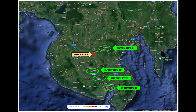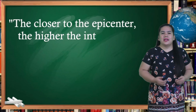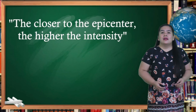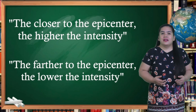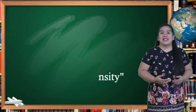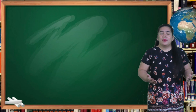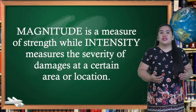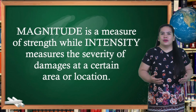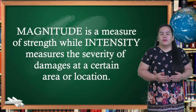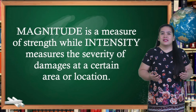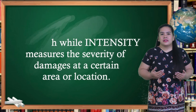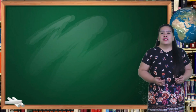Thus, this would tell us that the impact of the shaking varies. In other words, the closer an area to the epicenter, the higher the intensity, and the farther it is from the epicenter, the lower the intensity. To sum it up, we can say that the magnitude of an earthquake is the measure of the size of its strength, while intensity is an indicator of the severity of the damages at a certain area or location caused by it.